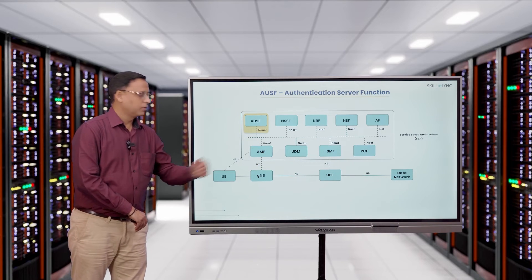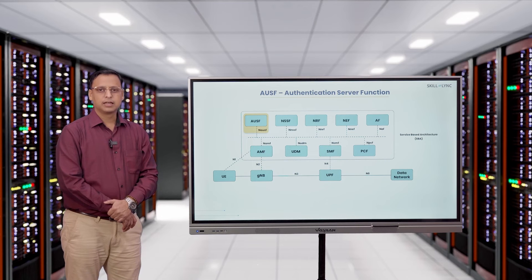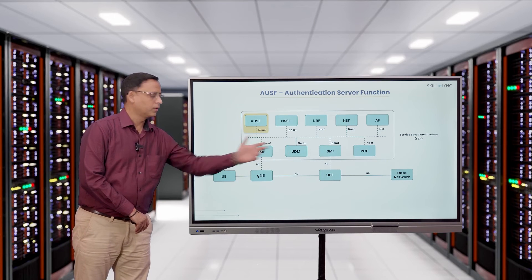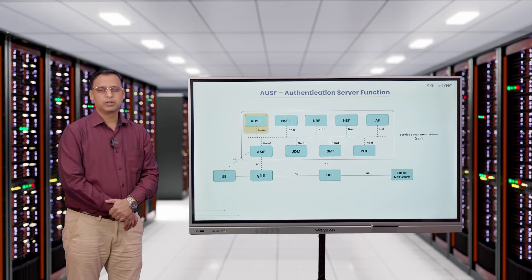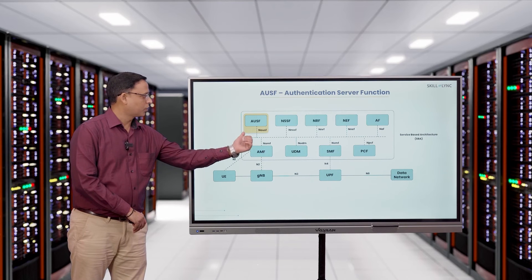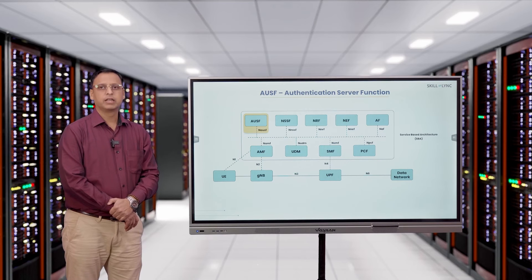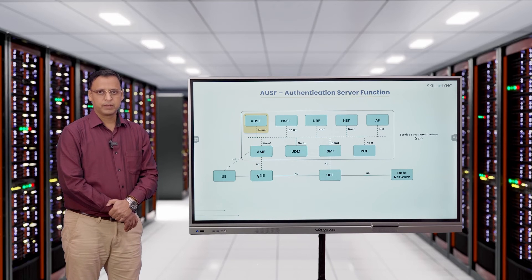AMF is always there in the visited network, while AUSF and UDM always remain in your home network. So because of the AUSF, we also have some control on the authentication even in the home network.